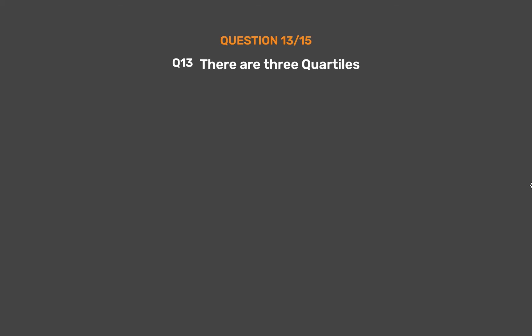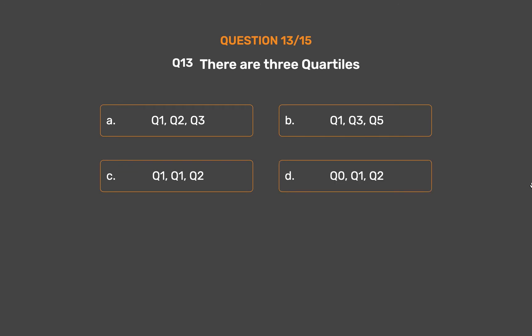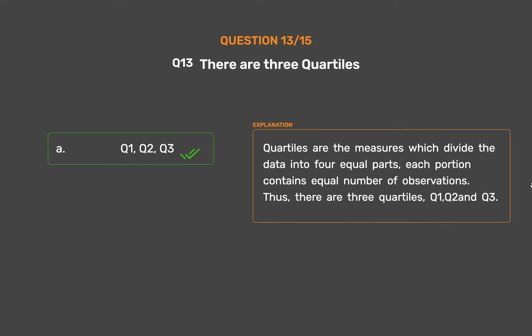Question number 13. There are three quartiles. Option A: Q1, Q2, Q3. Option B: Q1, Q3, Q5. Option C: Q1, Q1, Q2. Option D: Q0, Q1, Q2. The correct answer is Option A: Q1, Q2, Q3. Quartiles are measures which divide the data into four equal parts, each portion containing an equal number of observations. Thus, there are three quartiles: Q1, Q2, Q3.